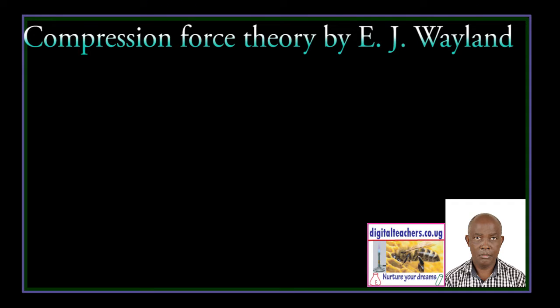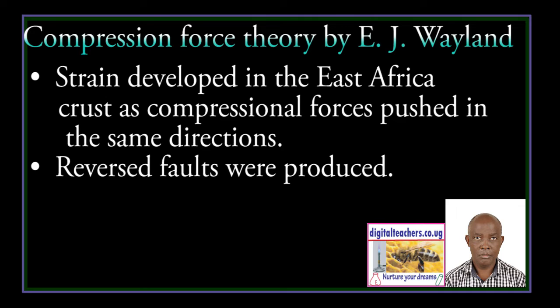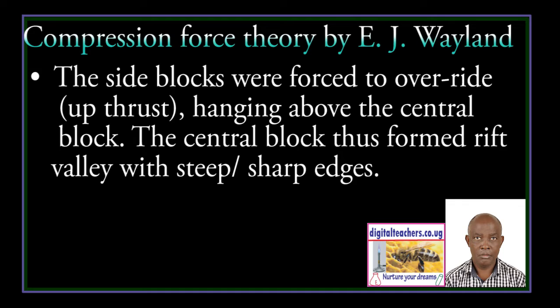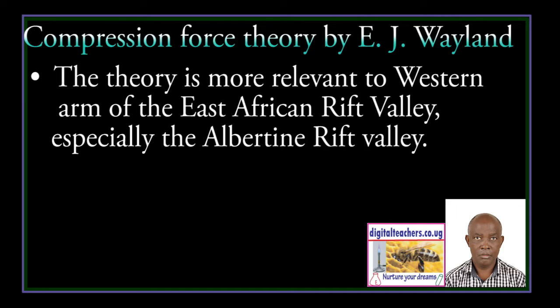The compression force theory by E.J. Wayland proposes that forces pushed in the same direction, producing reverse faults. The side blocks were forced to override, hanging above the central block. The central block thus formed a Rift Valley with steep or sharp edges. The sharp edges were later modified by erosion and mass wasting. This theory is more relevant to the western arm of the East African Rift Valley, especially the Albert Rift Valley.